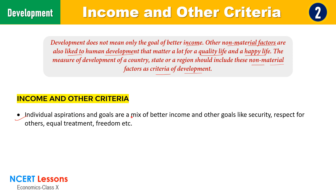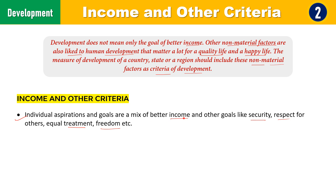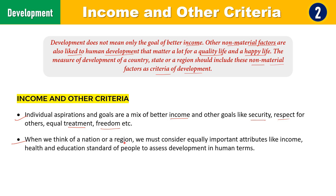Individual aspirations and goals are a mix of better income and other goals like security, respect, treatment and freedom — many non-material things we look for other than income to live well. When we think of a nation, we must consider equally important attributes. When judging the development of a nation, we must tag the measuring tools with income, health and education — meaning other than income, we must take into account the health and educational standard of the people to assess development in human terms.